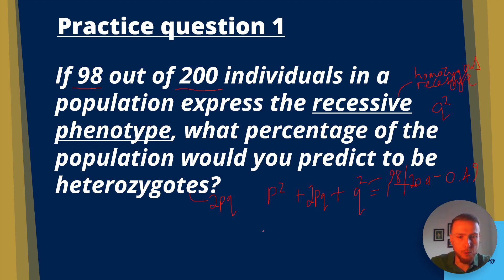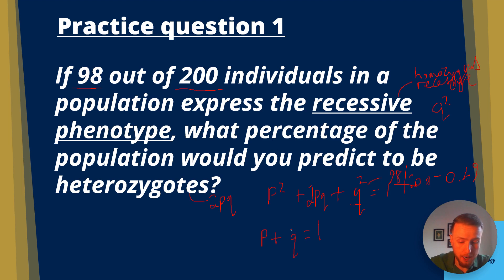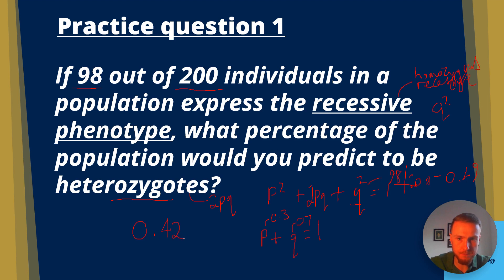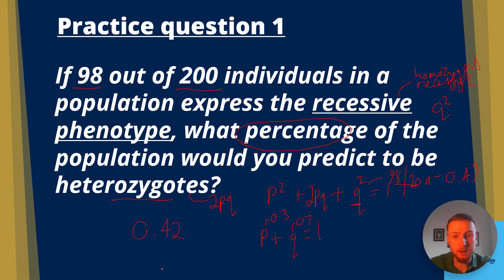We have Q squared equals 0.49. Square rooting gives us Q equals 0.7. Using P plus Q equals 1, P equals 1 minus 0.7, which is 0.3. The heterozygotes are 2PQ, so 2 times 0.3 times 0.7 gives us 0.42. The question asks for a percentage, so 0.42 equals 42% heterozygotes.